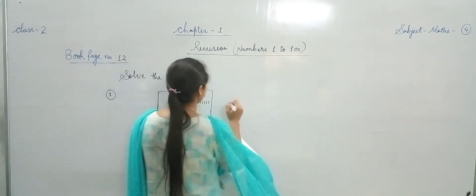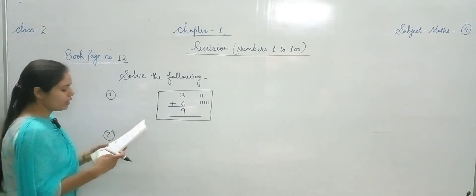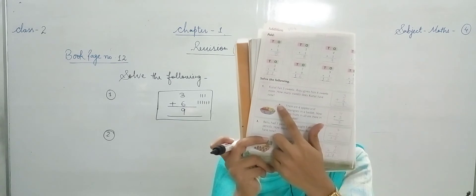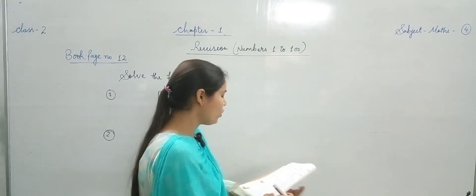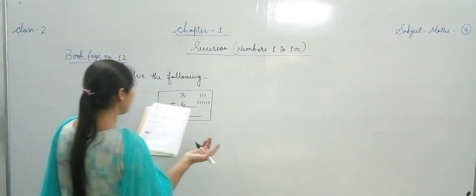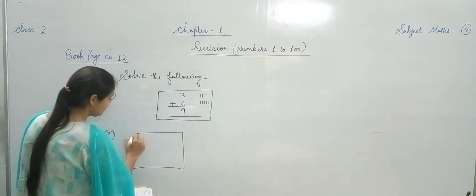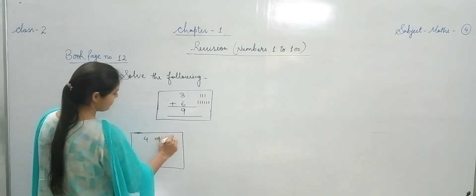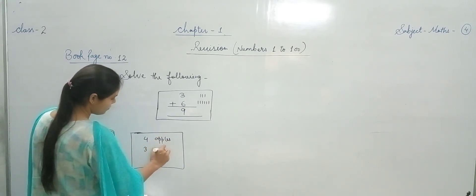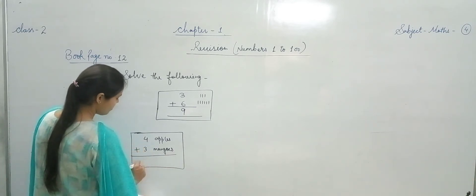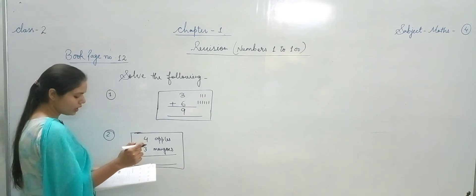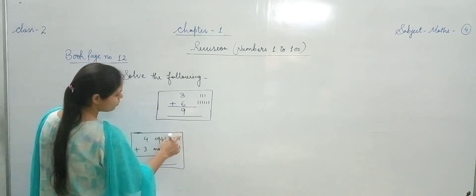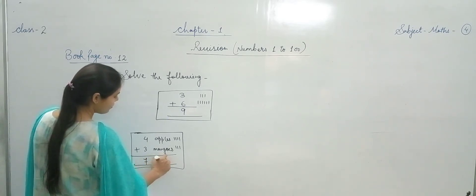Problem number 2 — there are 4 apples and 3 mangoes in a basket. How many fruits in all are there in the basket? Answer box बना लेते हैं। 4 apples plus 3 mangoes — 4 plus 3: lines draw करके count करते हैं — 1, 2, 3, 4, 5, 6, 7. Answer: 7 fruits.